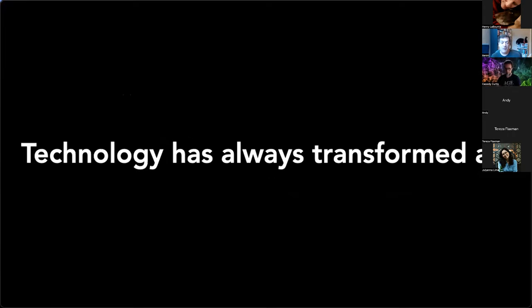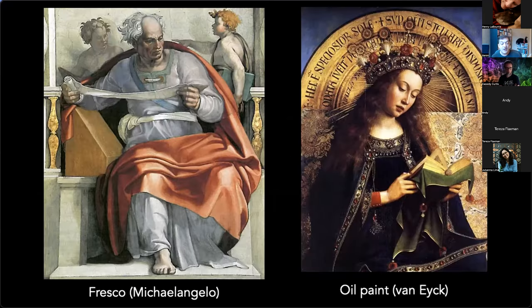To explain these points, I want to provide a lot of background and context: technology is something that has always transformed art. What we consider art has changed a lot over the centuries, and technology has been one of the driving forces of that transformation. For example, in the 15th century, Van Eyck developed practical oil paint methods, which provided a lot more artistic expressiveness to artists — both in terms of convenience and the ability to capture tones, colors, and rich detail. This is one example of a technology transforming the nature of the art form.